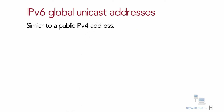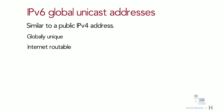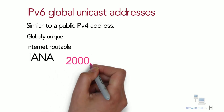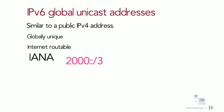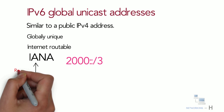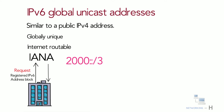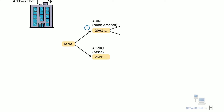IPv6 global unicast addresses are similar to public IPv4 addresses — they are globally unique, internet-routable addresses. Currently, IANA has assigned the 2000::/3 addresses to the global pool. Organizations that need an IPv6 address request a registered IPv6 address block, which is assigned as a global routing prefix. Both IPv6 and IPv4 address assignment processes rely on the same organizations: IANA, ICANN, the Regional Internet Registries (RIR), and the ISPs.